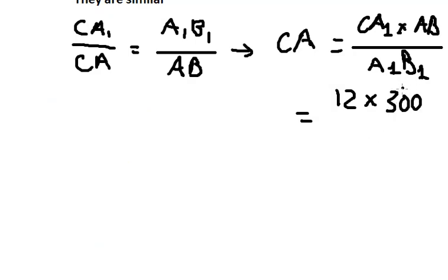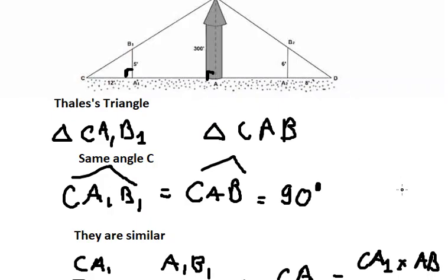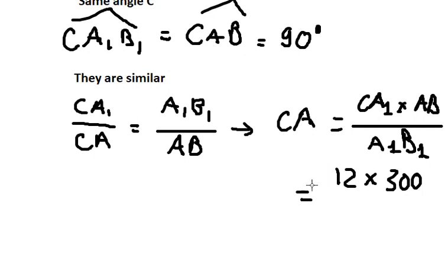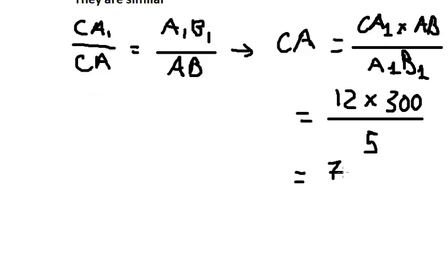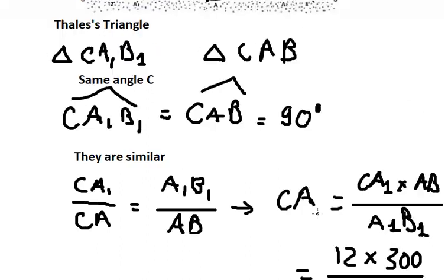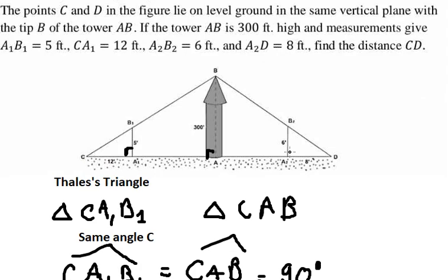And A1B1 is 5 feet, so this gives us 720 feet. Now we can do similar calculations for DA.